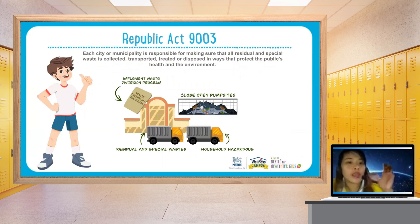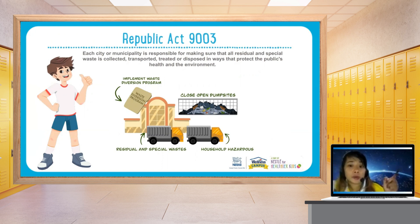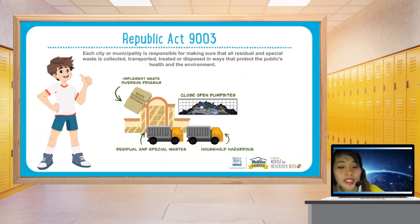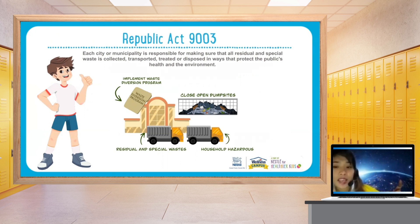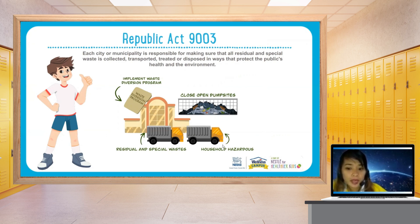Under Republic Act 9003, each city or municipality — like the one we live in — is responsible for making sure that all residual and special waste is collected, transported, treated, or disposed of in ways that protect public health and the environment. This includes closing open dump sites and properly managing residual, special waste, and household hazardous waste.